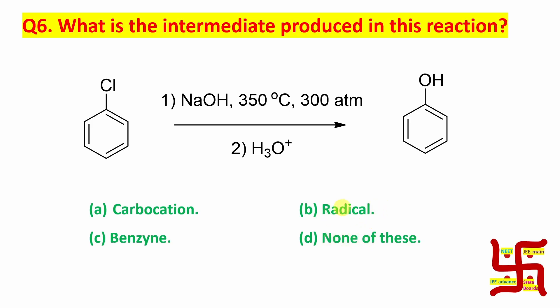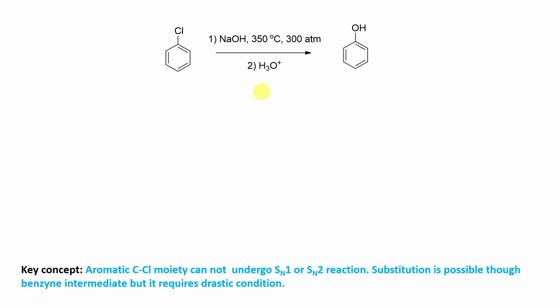Now student, this is a mechanism based question. So let's learn the statements. Now here, if you see that this chlorine is actually substituted by OH. So you can expect that sodium hydroxide is there, so this hydroxide acting as a nucleophile and replacing the chlorine. Student, that is not possible.